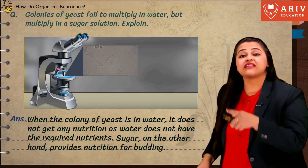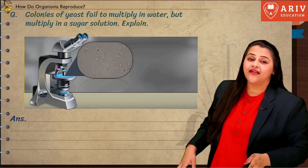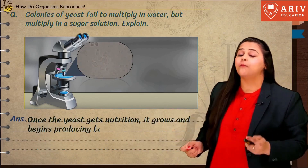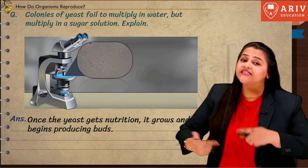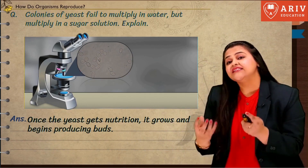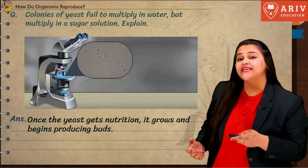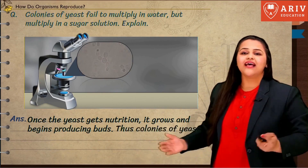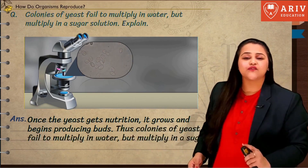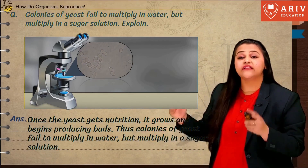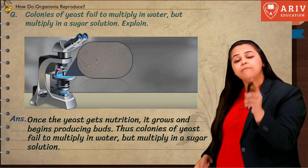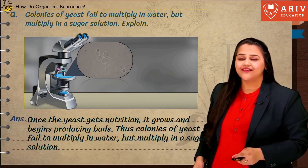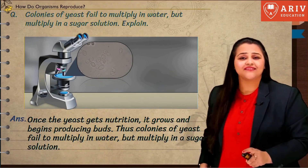When you put sugar, on the other hand, it is going to provide yeast with nourishment for budding. And when it provides nourishment for budding, of course the yeast will start to grow and produce buds, as you can see under the microscope. Thus, the colonies of yeast will not multiply in water, but they will multiply in a sugar solution. A very simple answer.